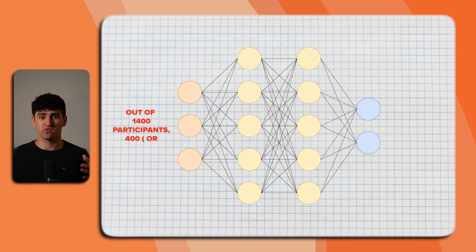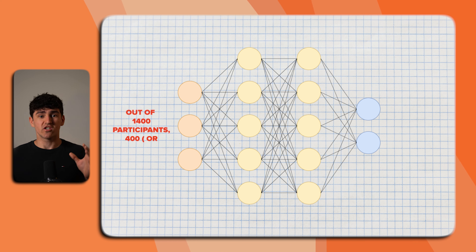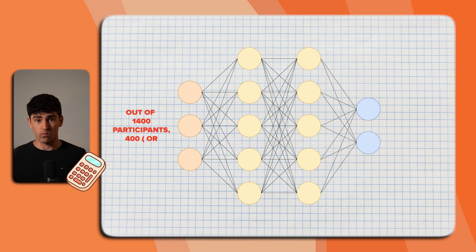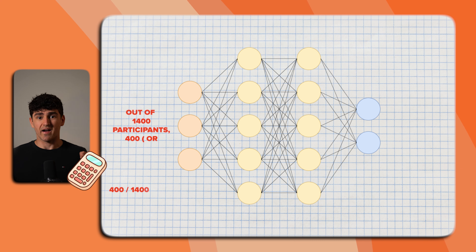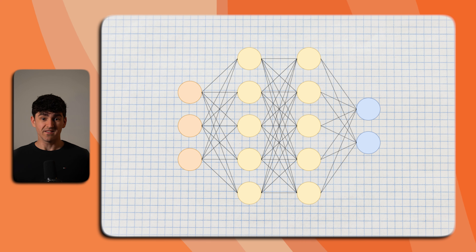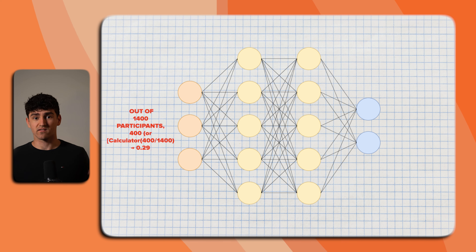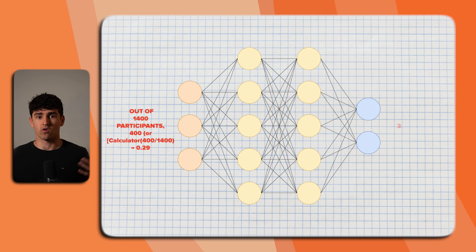It predicts a new special token — we'll get to the details in a second. But now it chooses which API to use, in this case the calculator, predicts the input word by word — in this case '400 divided by 1400' — and receives a response from the API. This API call and its results are added to the input context to then predict the next word of the actual sentence. The model now predicts the next tokens: '29' and the percentage symbol, and so on. And that is how the final integration of tools works on a higher level.